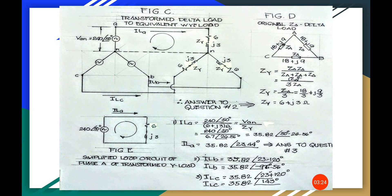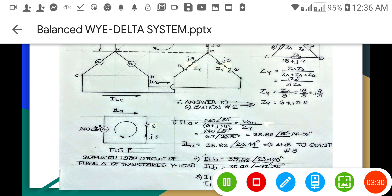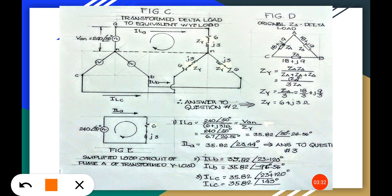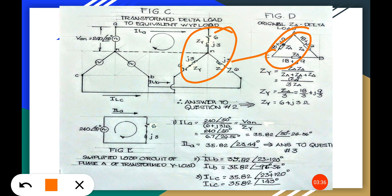This one is already transformed from the delta to this Wye. Now what happens here is that we have to find the Zy impedance using this original delta here.